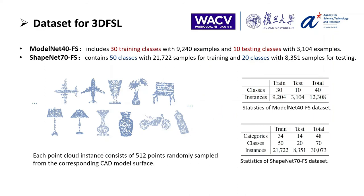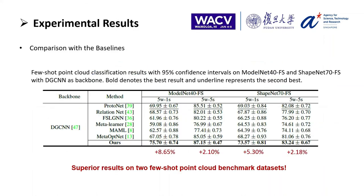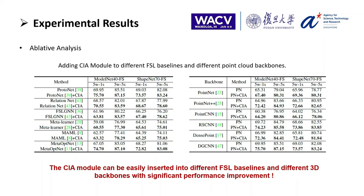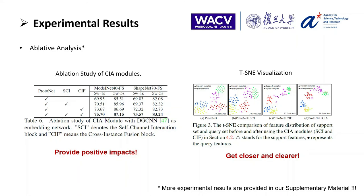Moreover, to evaluate the performance objectively, we also construct two benchmark datasets: ModelNet40-FS and ShapeNet70-FS. We first compare the classification accuracy with the state-of-the-art baselines on these two benchmarks, where our method exceeds other baselines by a large margin — about 6% for 1-shot and 2% for 5-shot. We also embed the CIF module into different few-shot learning baselines and different backbones to validate generalization ability. There are consistent performance improvements after incorporating the CIA module. We further perform ablation studies to analyze the contribution of each module.